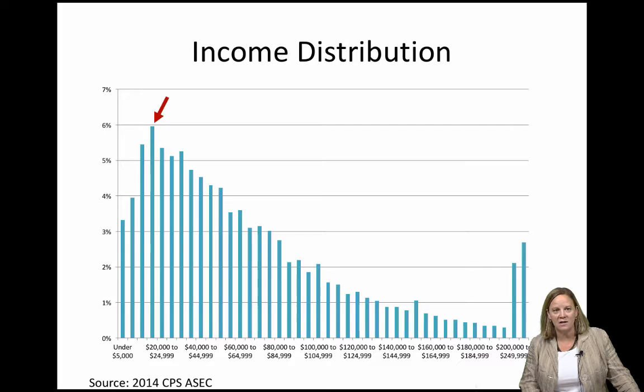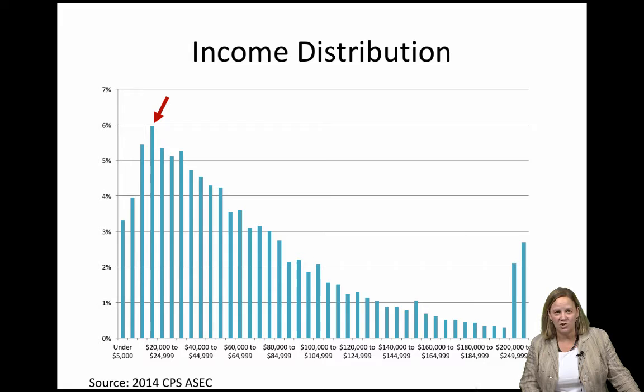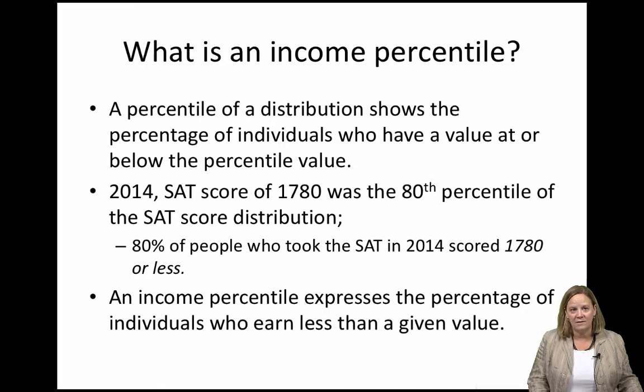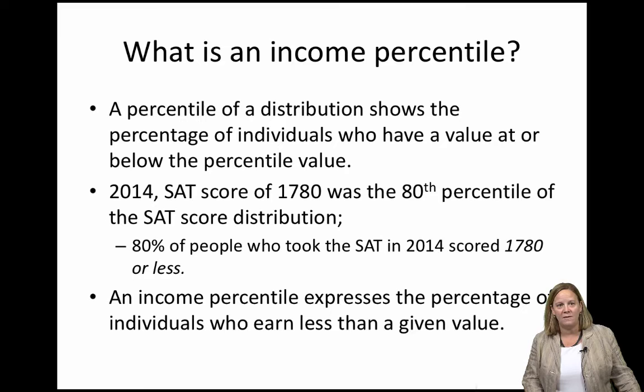Another way to say this is that the 18th percentile of the income distribution here is $20,000. Income distributions such as this form the basis for one type of inequality measure based on percentiles. A percentile of any distribution gives the amount at which a given percentage of individuals have values at or below that value. For example, if 75% of individuals have a height of 5.5 feet or less, we would say that the 75th percentile of the distribution of height is 5.5 feet. Similarly, in 2014, an SAT score of 1780 was the 80th percentile of the SAT score distribution, meaning 80% of test-takers scored 1780 or lower.